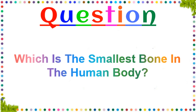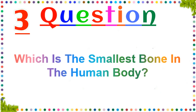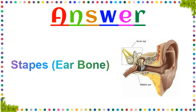Which is the smallest bone in a human body? Stapes — an ear bone.